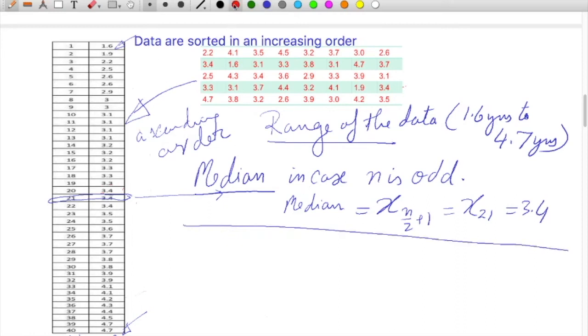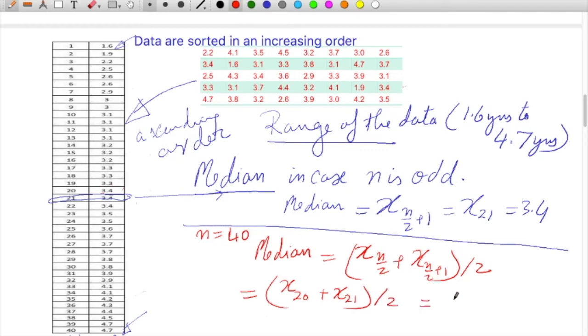However, if n is 40 as given in the data, then median is (x(n/2) + x(n/2 + 1)) divided by 2. In this case it will be (x20th + x21st) divided by 2.